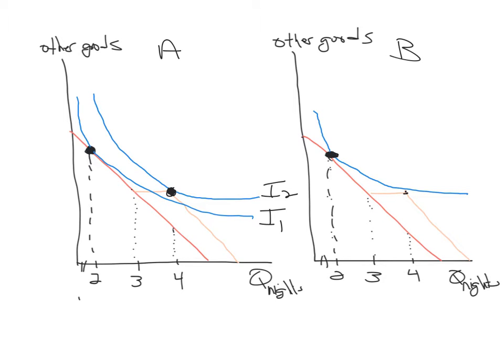For this case, part A of the problem: Betty doesn't take advantage of the promotion and continues to buy two nights, while Angela does take advantage of the promotion and buys the third night in order to get the fourth one free.